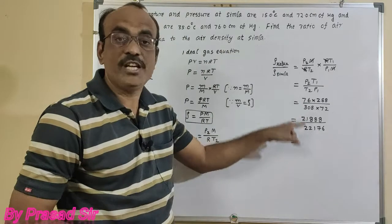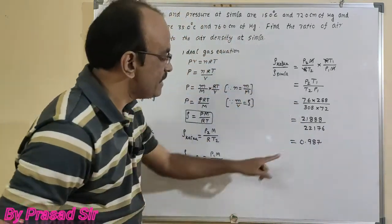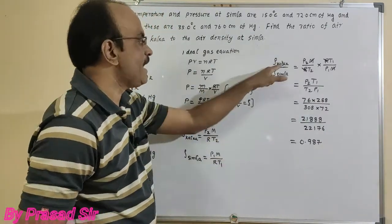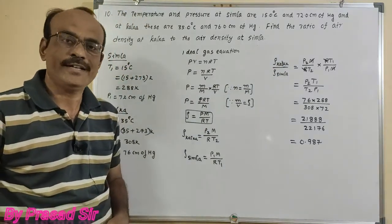On division of these two, we get 0.987. This is the ratio between air densities of Calca to Simla. This is the solution for question number 10.